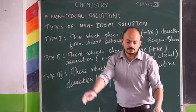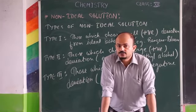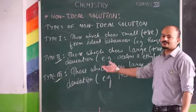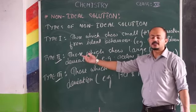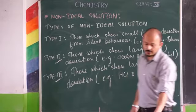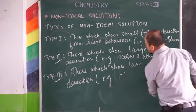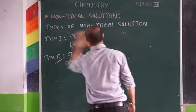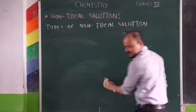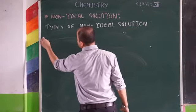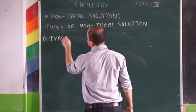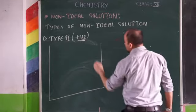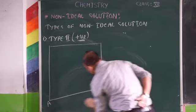We just saw the graph for the ideal solution. Now we will look at the graphs for large positive deviations and large negative deviations, and what kind of graph is shown by these two types of non-ideal solutions. Let's draw the graph for Type 2 — large positive deviations. Here, pure A is present on one side and pure B on the other side.